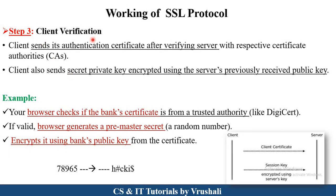The third step is client verification. In this step, the particular browser checks the banking server certificate to verify whether it is an authenticated, real website or not. If it is an authenticated certificate, the browser generates a pre-master secret code — a random number, also called a security code. For example, suppose the browser generates 78965 as the pre-master secret code. The browser then converts this secret code into encrypted format using the banking server's public key, making it very difficult to hack, attack, or read by normal users.